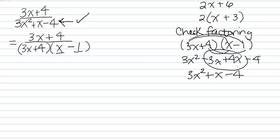There's a check right there. So here's our two factors. 3x plus 4 on top, 3x plus 4 on bottom. They both cancel out. That means your answer is 1 over x minus 1.